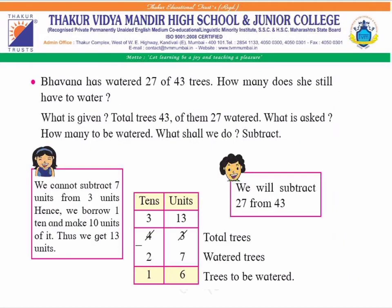Bhavana has watered 27 of 43 trees. How many does she still have to water? What is given: total trees = 43, of them 27 watered. What is asked: how many to be watered? What shall we do? Subtract.